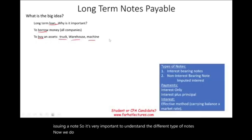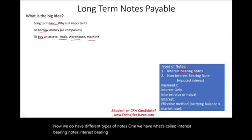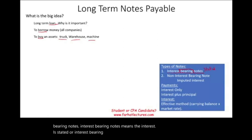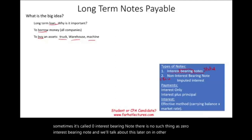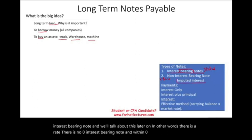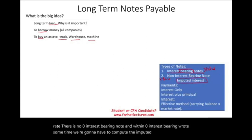We have different types of notes. One, we have interest-bearing notes, which means the interest is stated. We also have non-interest-bearing notes, sometimes called zero interest-bearing notes. There is no such thing as a truly zero interest-bearing note — we'll talk about this later. Within zero interest-bearing notes, sometimes we're going to have to compute the imputed interest.